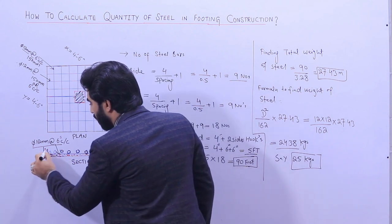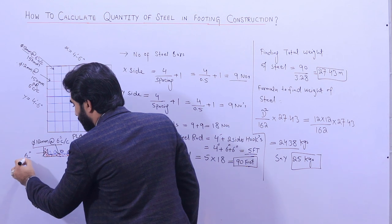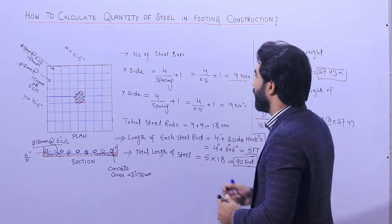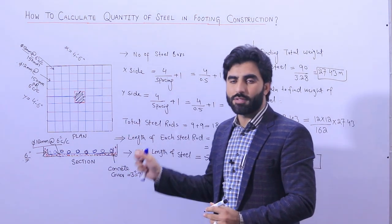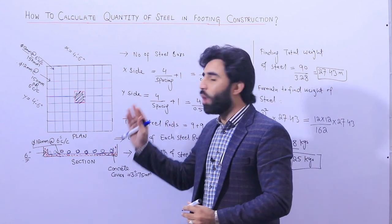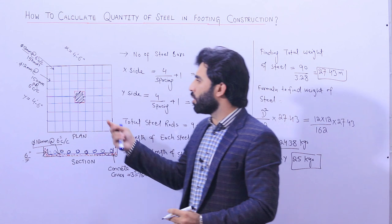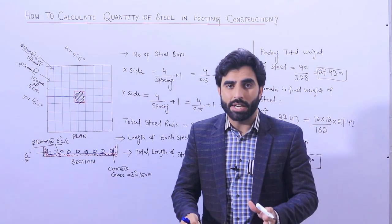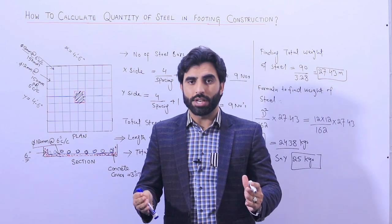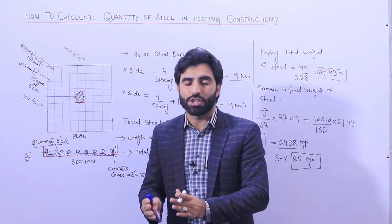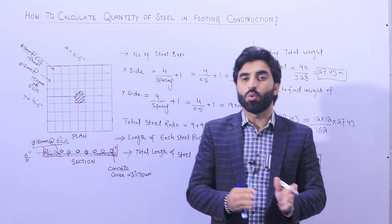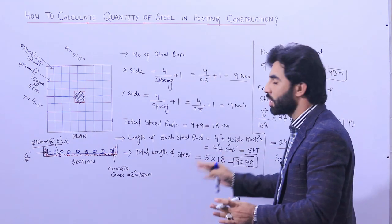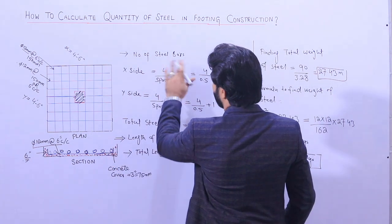You can also see we have hooks — each hook length is 6 inches with a bend, on both sides of each bar. Now, first of all I need to find the number of steel bars for the X side and also for the Y side. This is a square footing, so the numbers will be the same in both directions. However, I am guiding you for rectangular footings too — if you have, say, 5 feet in X and 3 feet in Y, you would need to calculate each direction separately.